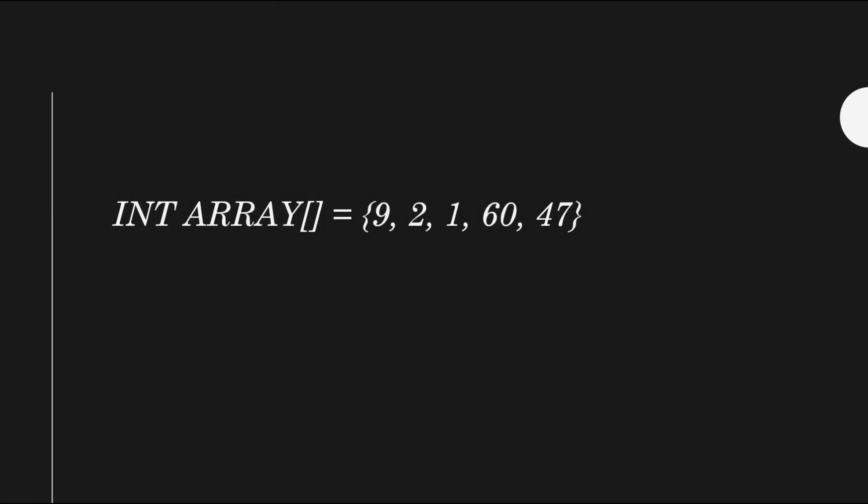So let's just say we have this array here. As you can see, this array has five elements: 9, 2, 1, 60, and 47. Simply by just looking at this array, you can see that the second highest number is 47.